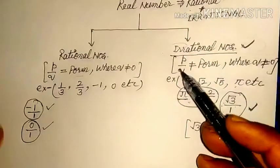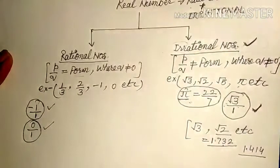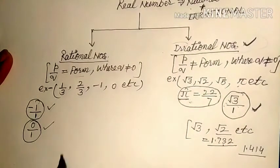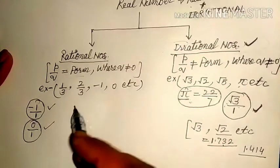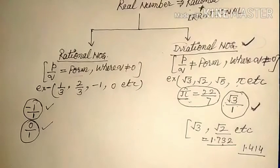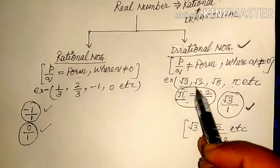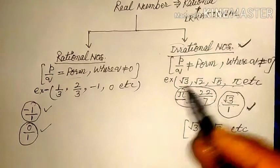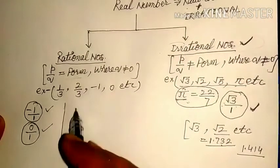Irrational numbers stop there and do not go further. Now, rational numbers can be divided into many sub-categories. First among those will be integers.